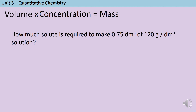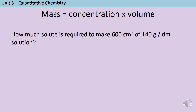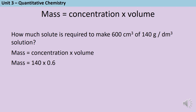So how much solute is required to make 0.75 dm³ of a 120 g/dm³ solution? I can rewrite my rearranged equation and multiply the concentration, which is 120, by the volume, which is 0.75. That gives a final answer of 90 grams. Sometimes the volume won't be in decimetres cubed, so we'll need to convert before we start. Here, we're asked to make 600 cm³ of a 140 g/dm³ solution. 600 cm³ is the same as 0.6 dm³, so we do 140 times 0.6, which is 84 grams.